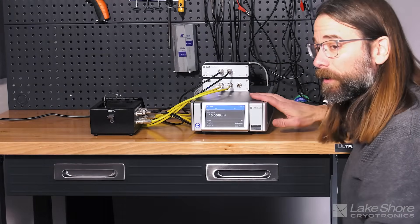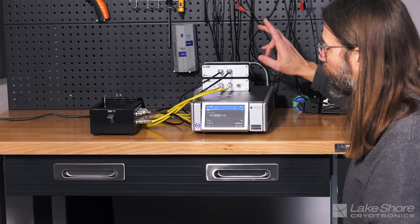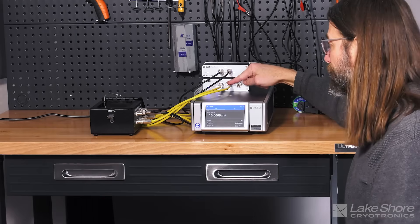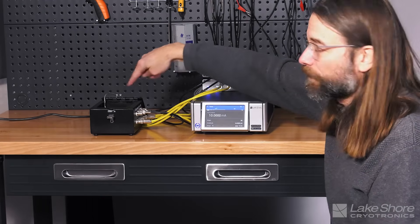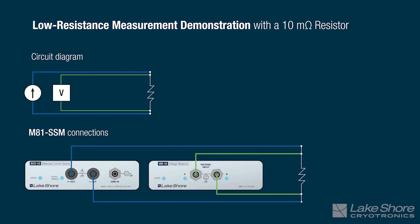It's connected up to our M81, which is our source measure system from Lakeshore Cryotronics. In this case, we are going to be sourcing current. We're using the BCS10, which is our balanced current source, and that's going to be sourcing current through the device under test. And then we're going to be performing a voltage measurement using our VM10 or voltage measurement module.